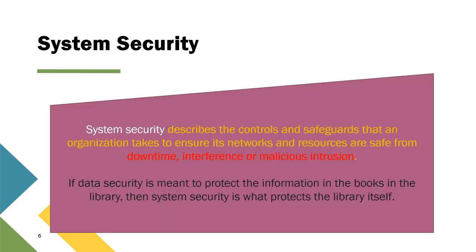Let us look at the first type: system security. System security is described by the controls and safeguards that an organization takes to ensure the network and resources are safe from downtime, interference, or malicious intrusion. Without system security, people could interfere or intrude into our system. If data security is meant to protect the information in the books in a library, then system security is what protects the library itself.